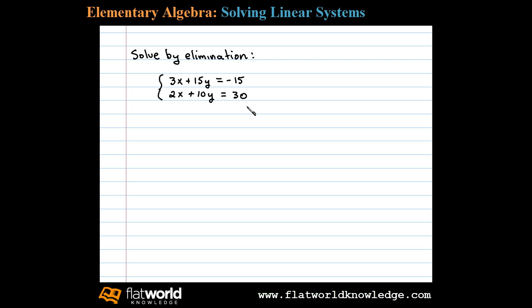Here we're asked to solve a linear system by elimination. In this case I'm going to try to eliminate the variable X by multiplying the first equation by negative 2 and the second equation by 3.